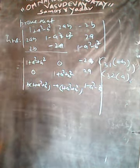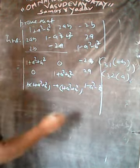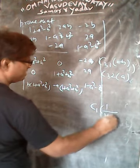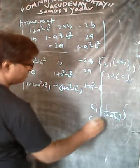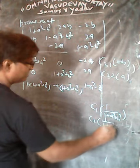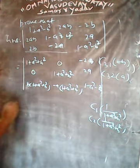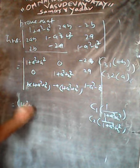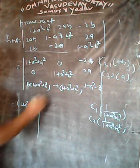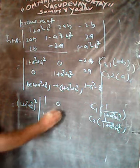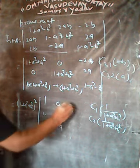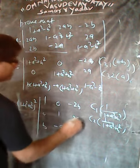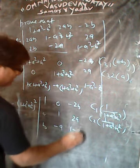Solving this, 1 plus a square plus b square will be common, so we can write the determinant as 1 plus a square plus b square times the 3×3 matrix: row 1 is 1, 0, b; row 2 is 0, 1, minus a; row 3 is minus 2b, 2a, 1 minus a square minus b square.